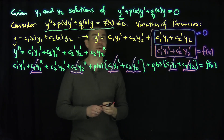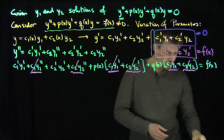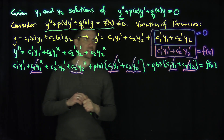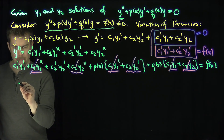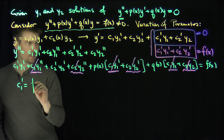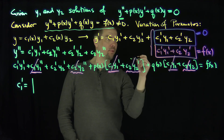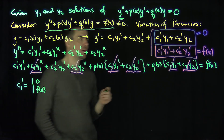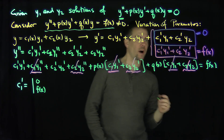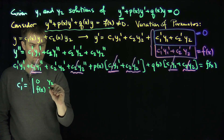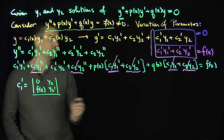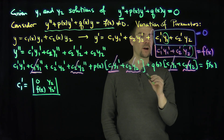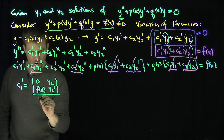We now have two equations and two unknowns, as is standard for variation of parameters. We solve using Cramer's rule. Cramer's rule tells us that c1 prime is the determinant obtained by replacing the first column with 0 and f of x, keeping the second column as y2 and y2 prime, all divided by the determinant of the coefficient matrix — which is the Wronskian of y1 and y2.